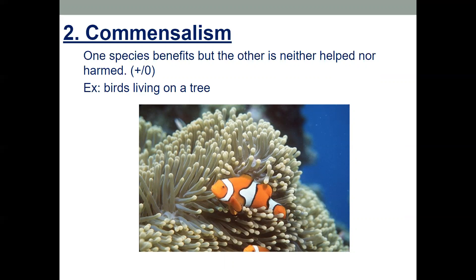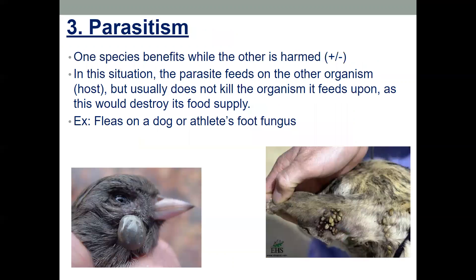The third type is parasitism: one species benefits and the other is harmed. The parasite feeds on the other organism, called the host, but usually does not kill it. Examples include fleas on a dog, athlete's foot, and head lice. There are some gross pictures in the book of parasites — I don't really look at them because they're nasty.